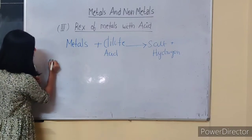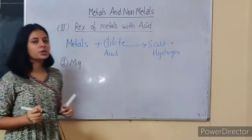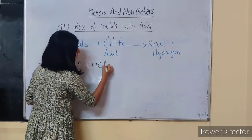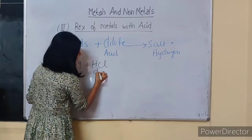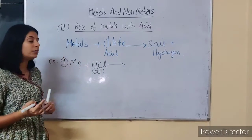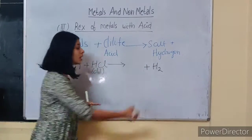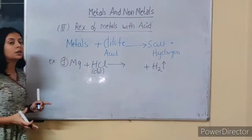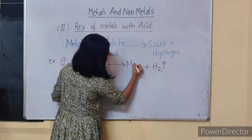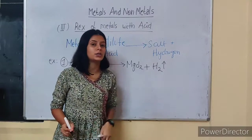The first example is reaction of magnesium metal with dilute hydrochloric acid. Magnesium reacts with HCl and gives salt plus hydrogen. Hydrogen is first released, and whatever is left — magnesium and chlorine — they react to give magnesium chloride. So magnesium chloride is the salt and hydrogen gas is produced.